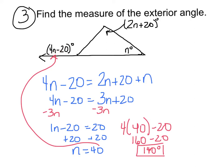Remember the two key ideas: the first one talks about the sum of the interior angles of a triangle, which is 180 degrees. The other one is the exterior angle theorem — the exterior angle is equal to the sum of the two non-adjacent interior angles.